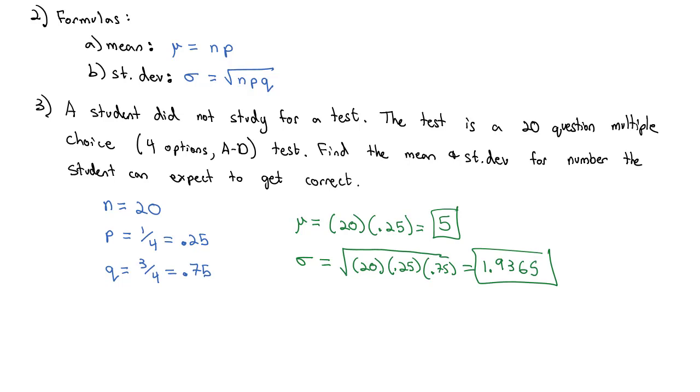So a student could expect to get an average of five questions correct, with a standard deviation of 1.9, around that average, if they did not study for this test. This example is a classic example of a binomial distribution. There's a fixed number of trials, 20, and there's two outcomes, getting the question right or getting the question wrong. That makes it a binomial distribution.